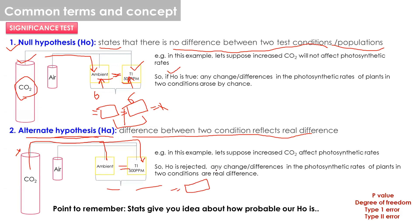In most cases we aim for the null hypothesis to be rejected, because only then can we observe some meaningful difference and report meaningful results. However, null hypotheses are sometimes true, and the observed difference is just by chance. To determine whether the null hypothesis is true or rejected, we use the p-value, which I'll explain in the next slide.